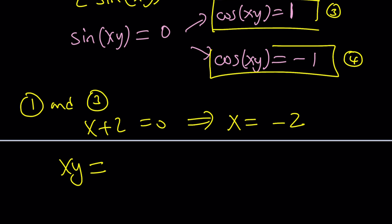Because cosine of pi is, wait a minute, cosine of pi is not 1. It's negative 1. So it can only be zero or multiples of 2 pi. So 2n pi. But we already know x is negative 2.